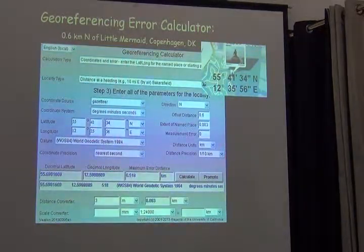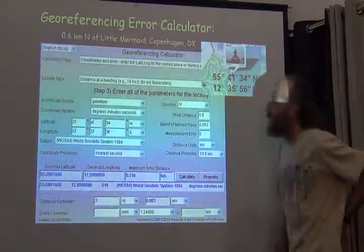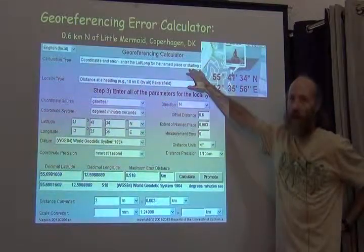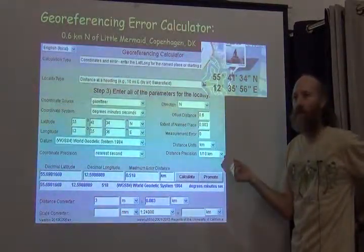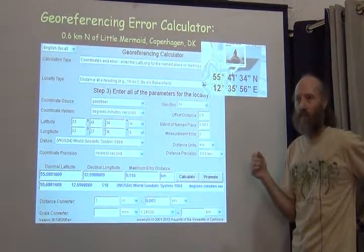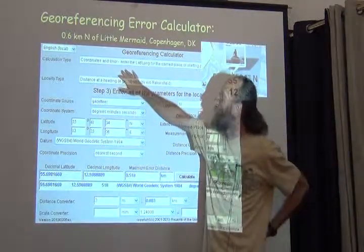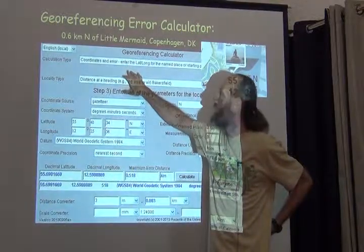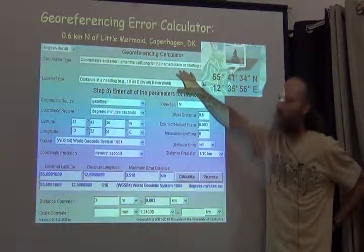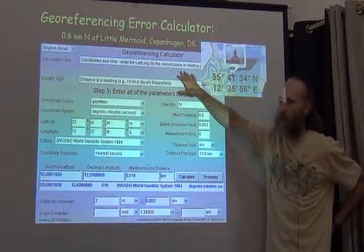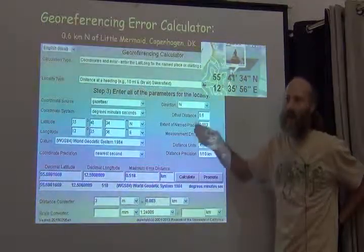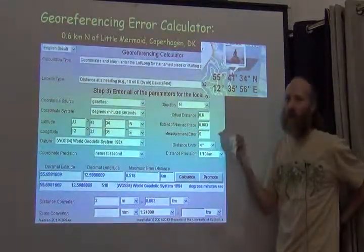The georeferencing calculator looks a little something like this. The way that it works is the first thing you do is choose the type of calculation that you want to make. In my case, what I would like are the coordinates of 0.6 kilometers north of the Little Mermaid, and I'd like to know what the uncertainty is. So that's why it's a coordinates and error calculation. When I do a coordinates and error calculation, I'm always entering the latitude and longitude for the named place.